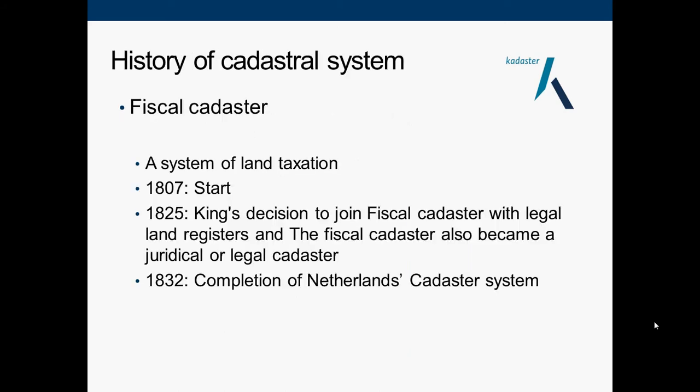In 1807, a fiscal cadastre was started in the Netherlands by the order of Napoleon Bonaparte. A fiscal cadastre is a system of land taxation. In 1825, the king of the Netherlands decided to join the fiscal cadastre to the legal cadastre, and the cadastre system in the Netherlands was completed in 1832.